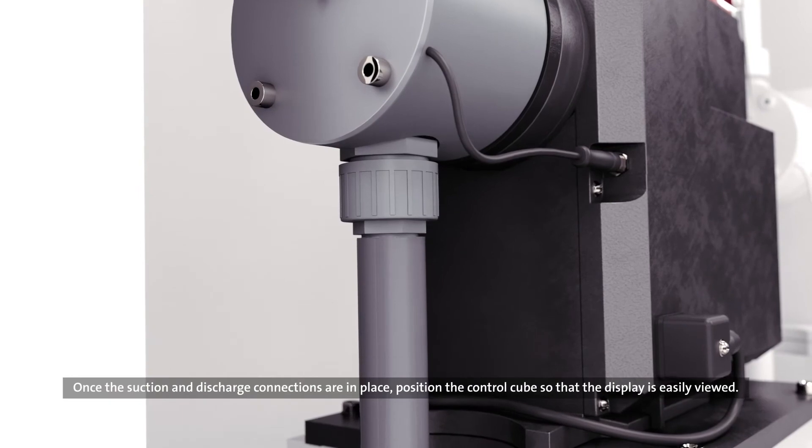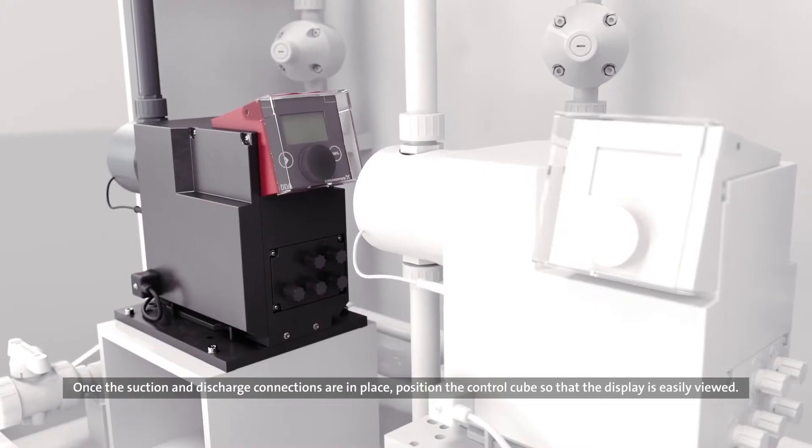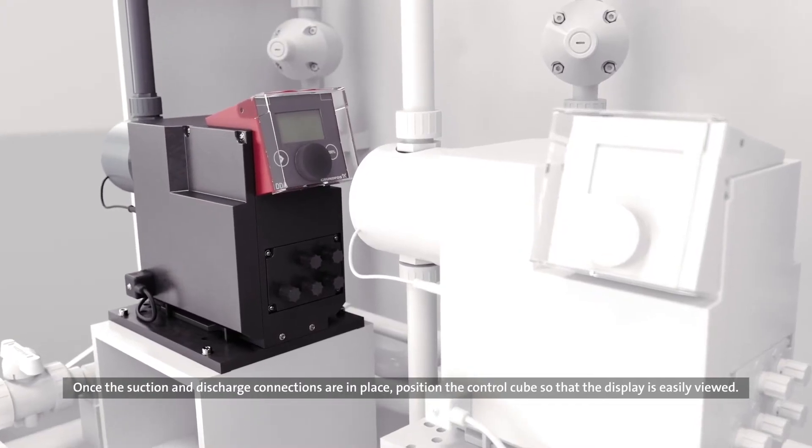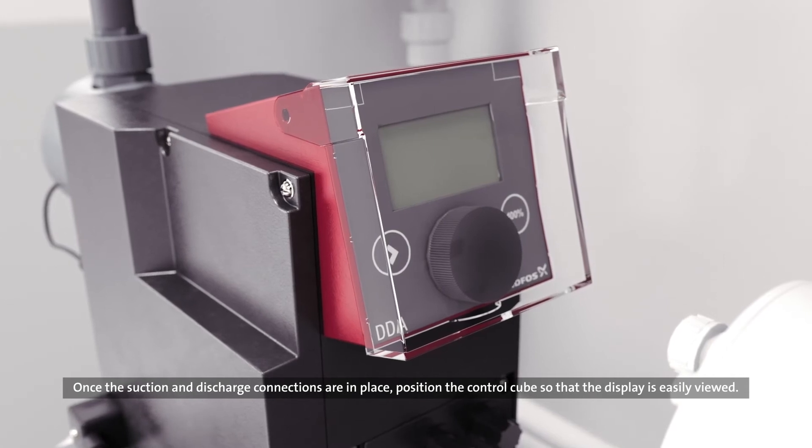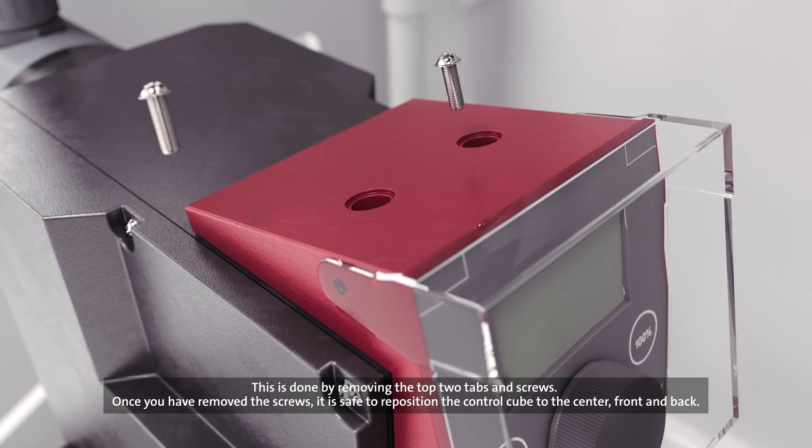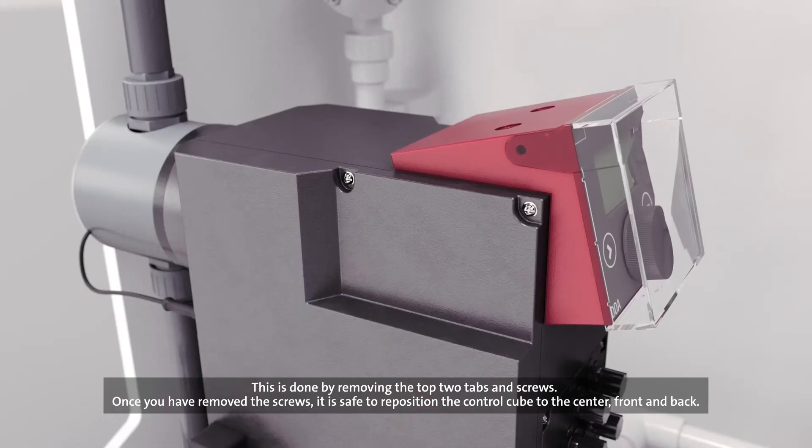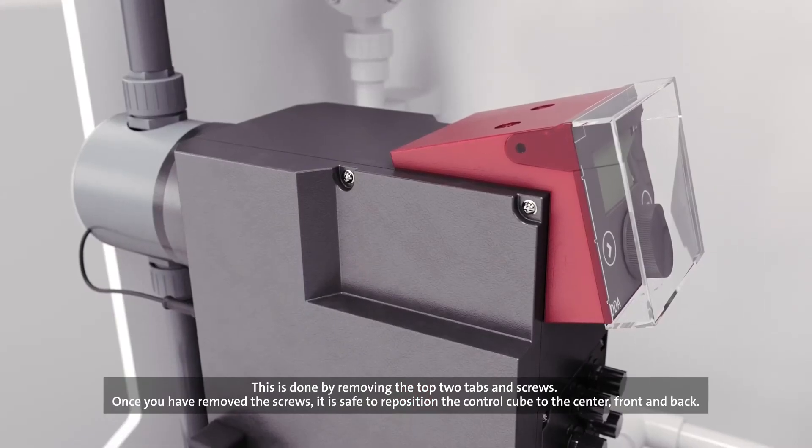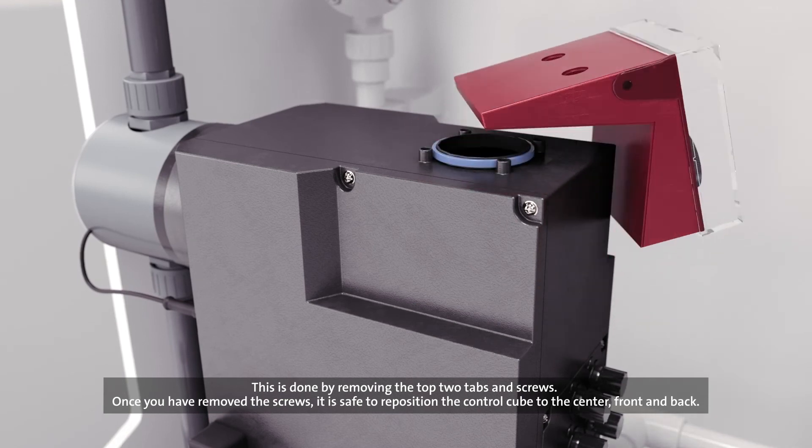Once the suction and discharge connections are in place, position the control cube so that the display is easily viewed. This is done by removing the top two tabs and screws. Once you have removed the screws, it is safe to reposition the control cube to the center, front and back.